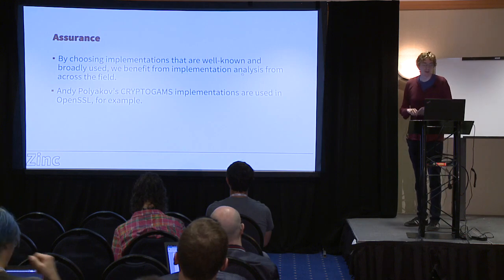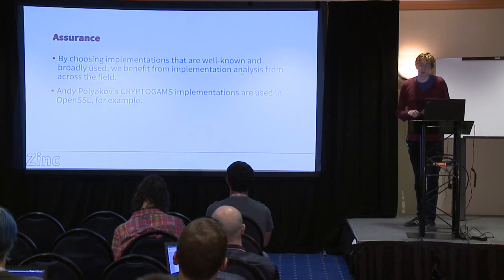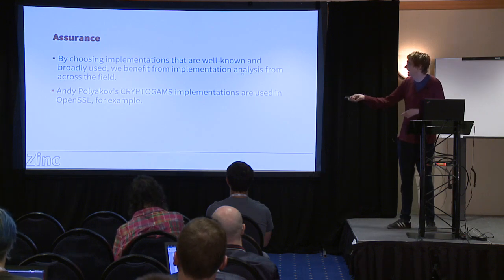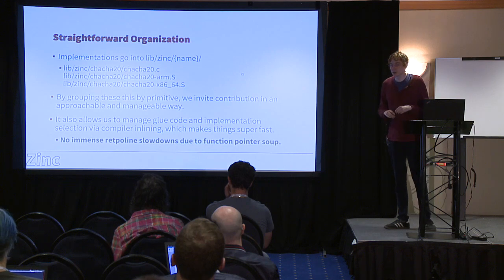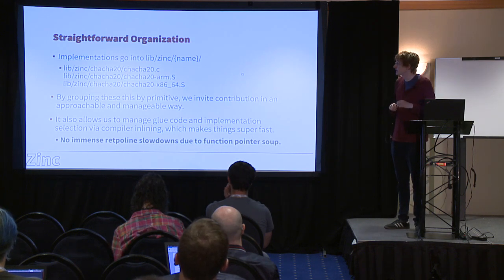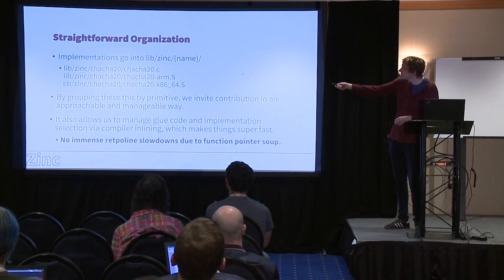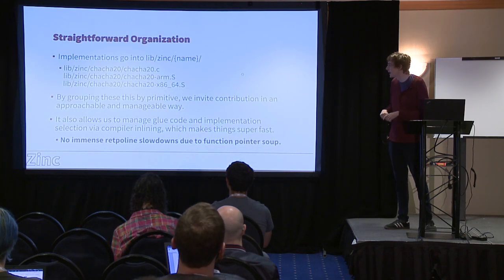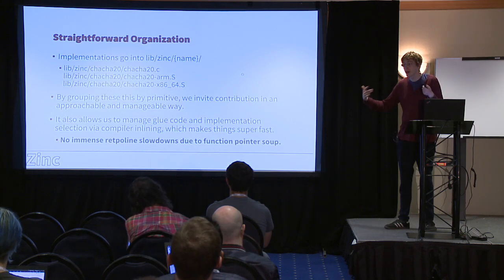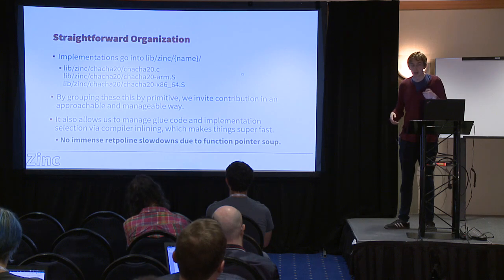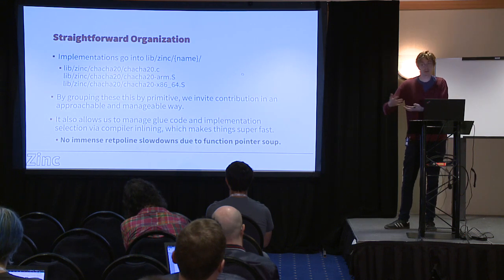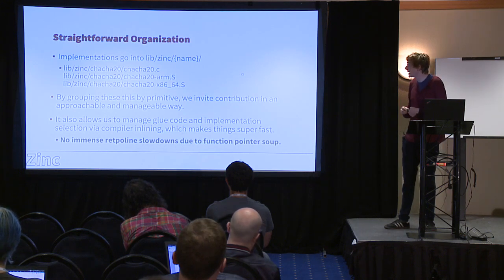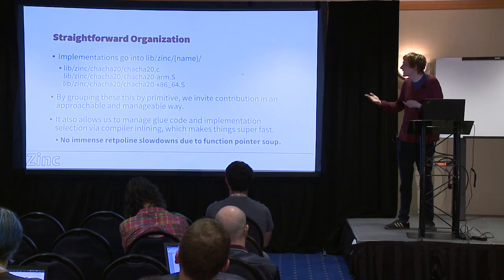By choosing implementations that are well-known or broadly used, we benefit from the analysis people are already doing - things from Polyakov's CryptoGAMS, used in OpenSSL. The organization lives in lib/zinc and then the name of the cipher. For ChaCha it's lib/zinc/chacha, with the generic C one, the ARM one, the x86-64 one, and so forth. Grouping by primitive makes it easy to open it up and see what's there, what's not there, what could be added. How does the kernel implement ChaCha20? Open the ChaCha20 directory and you see it. It also allows putting glue code right next to the implementations for fast compiler inlining.